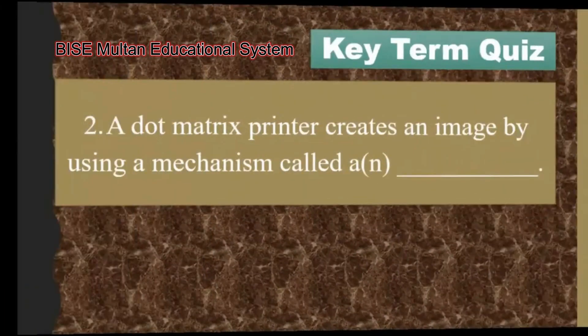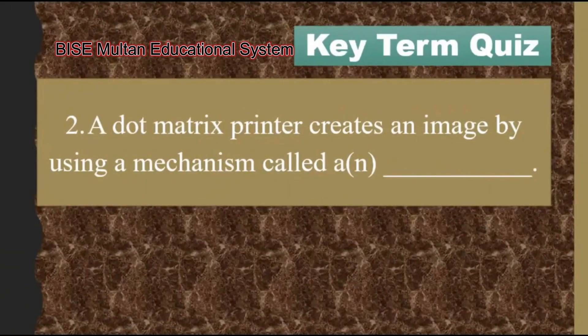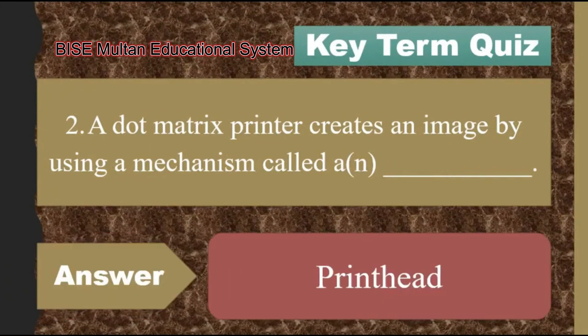Question number 2. A dot matrix printer creates an image by using a mechanism called blank. The answer is print head.